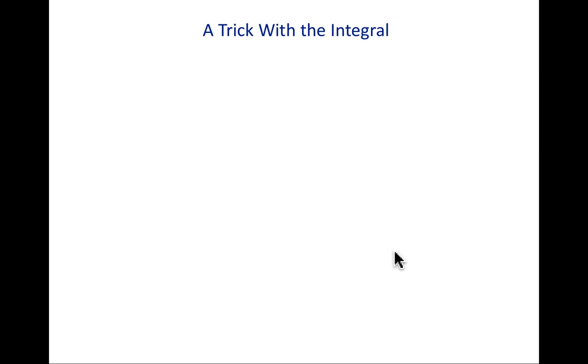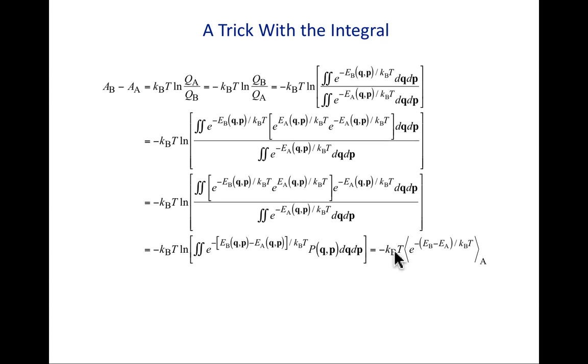So, what can we do? Well, we can actually play a little trick with the integral. So, let me come back to this question of Helmholtz free energy for B minus Helmholtz free energy for A. So, if I were to write that as KT log 1 over QB minus KT log 1 over QA, well, a difference in logs is like a log of ratios, right? So, I can, in fact, write this as KT log QA over QB.